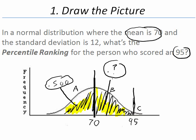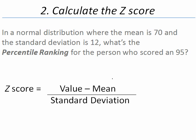Our second step after we draw the picture is calculate the z-score to find out what is the number of standard deviations between the mean of 70 and the value of 95. By finding out how many standard deviations are between 70 and 95, we can go to the z-table and look up the area between the mean of 70 and the value of 95.